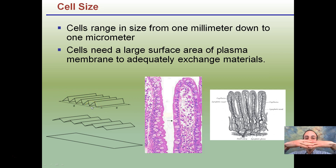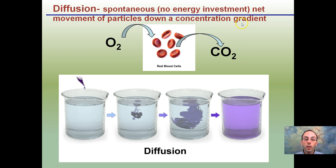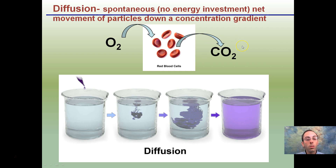Think of a flat solid area — very limited contact surface. But if you fold it or extend finger-like projections, you dramatically increase the surface area available for material exchange. This diffusion process is critical: cells like red blood cells take in oxygen and release carbon dioxide. Diffusion is spontaneous — no energy investment is required for the net movement of particles down the concentration gradient. Just as a drop of food dye diffuses throughout water using molecular motion, oxygen freely enters cells and CO2 freely leaves — no energy required.